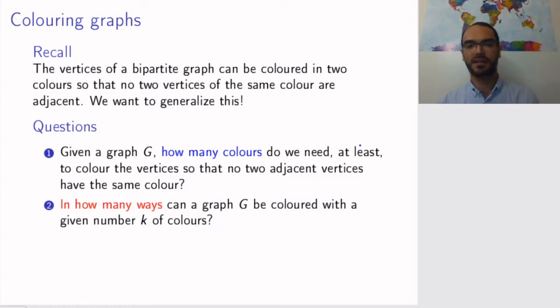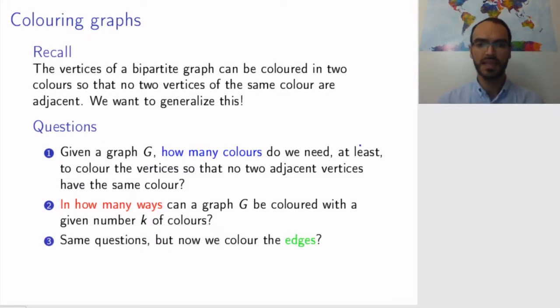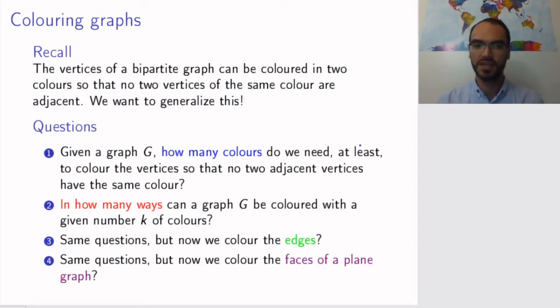If we know that we can color a certain graph with a certain number of colors, we can flip the question and ask, in how many ways can we do this? In how many ways can we color this given graph with this set of colors? And so far by coloring graph I mean we color the vertices, but you can also ask similar questions about edge colorings and if you have a plane graph you can ask the same question about coloring the faces of a plane graph. So these are all the questions that we are going to look at.